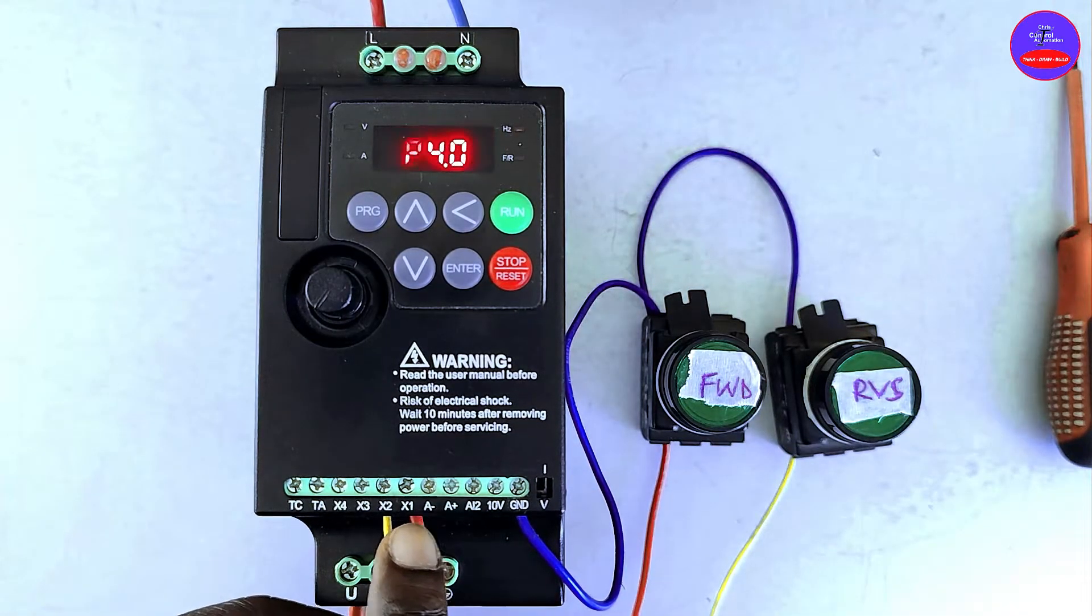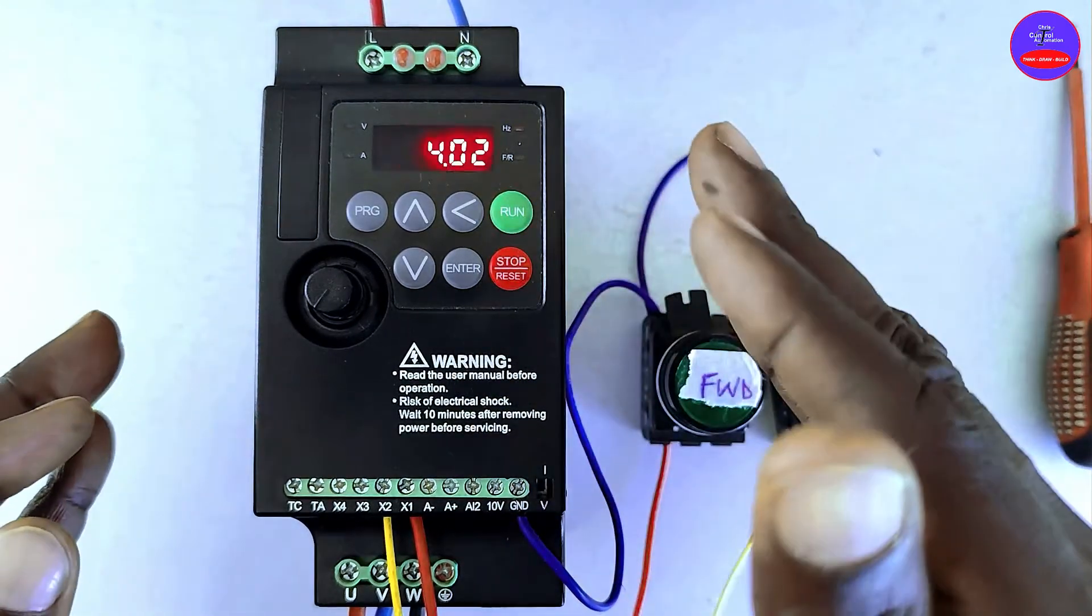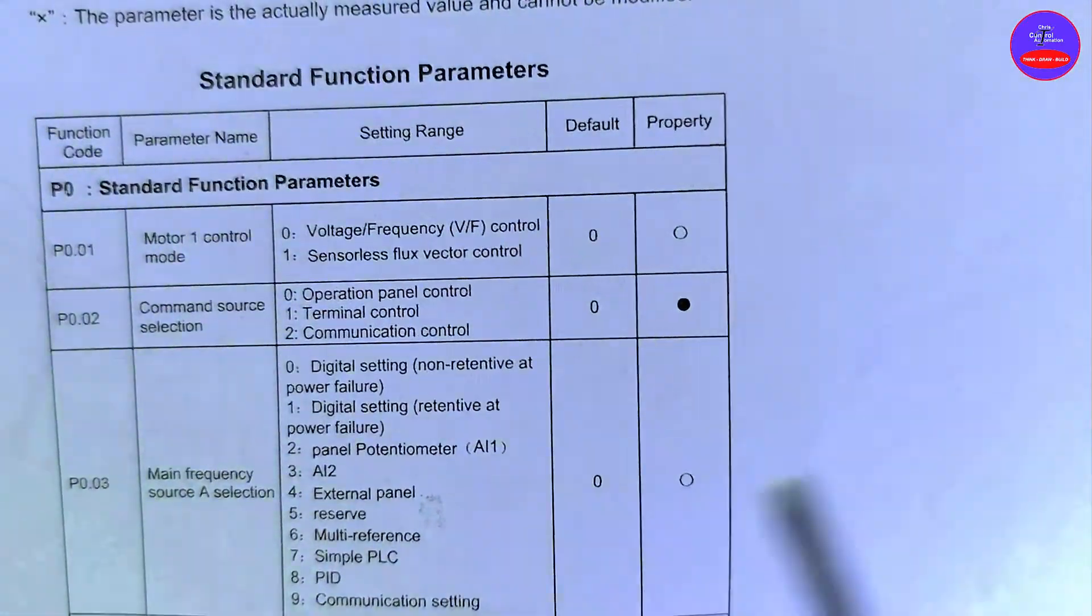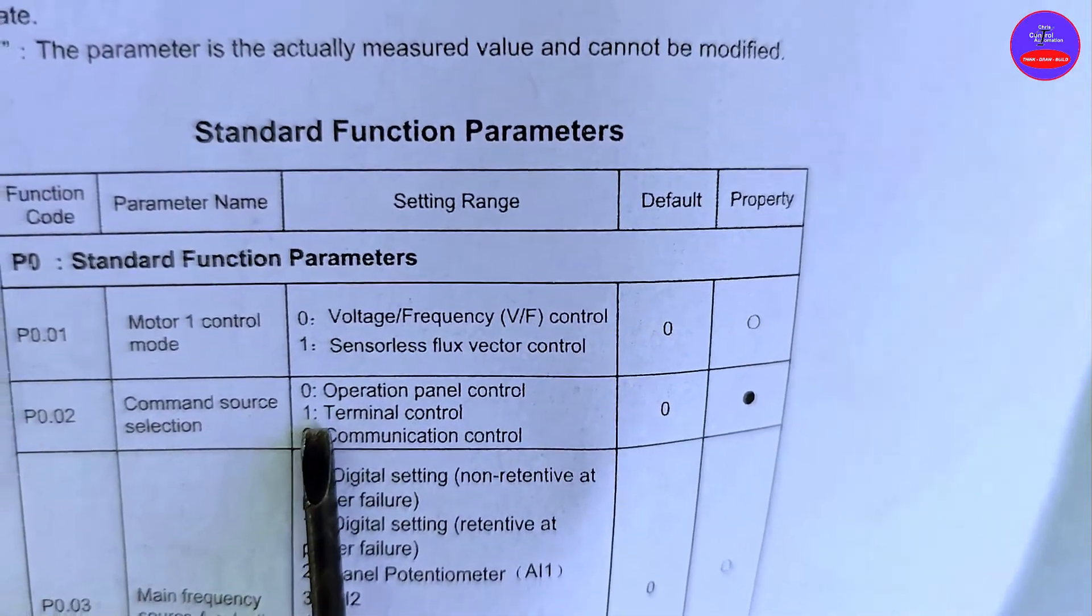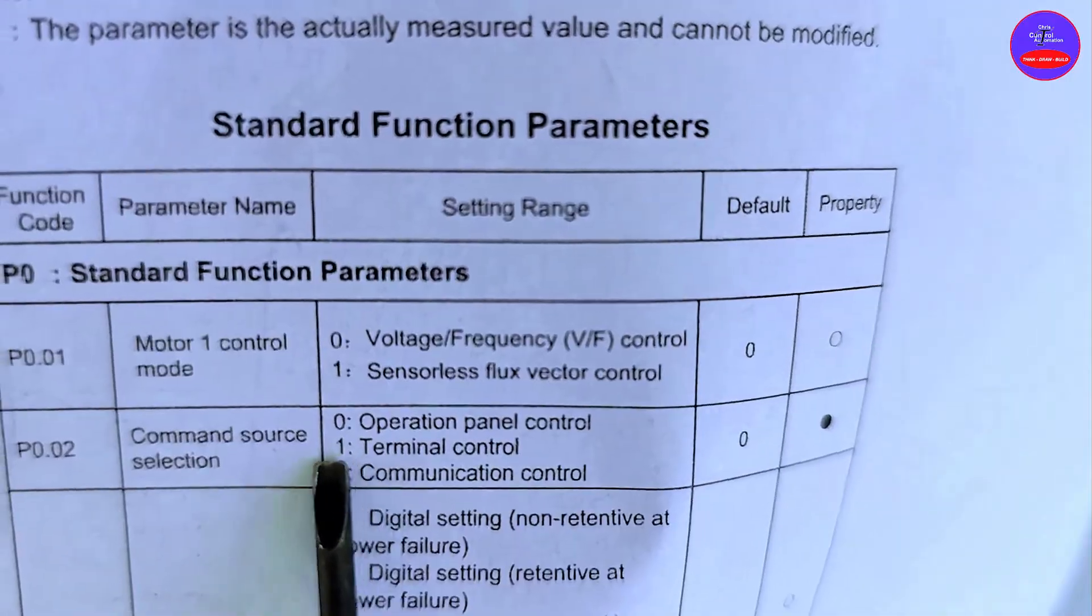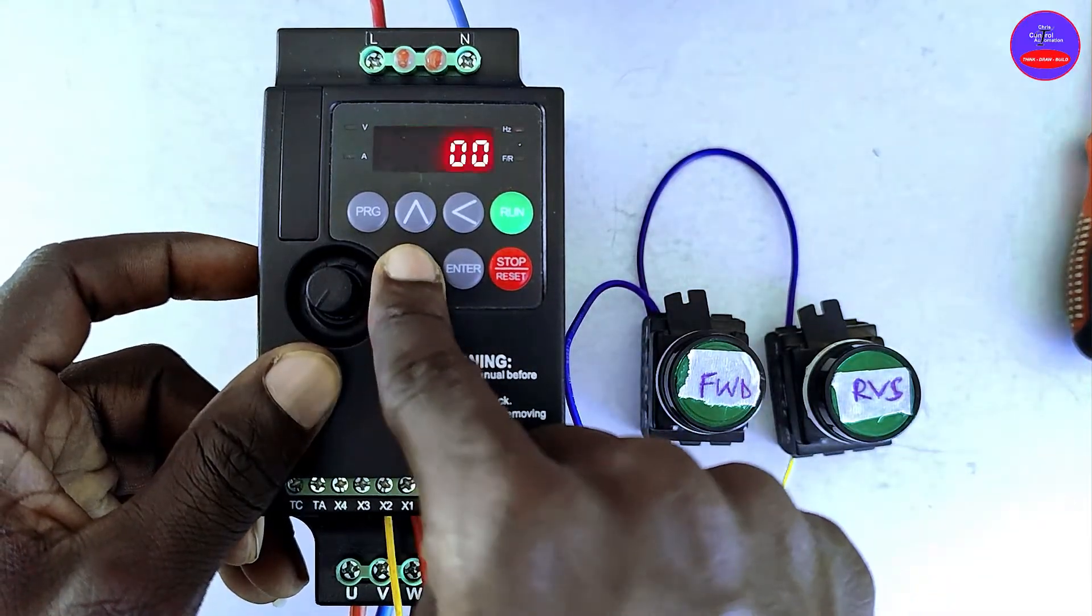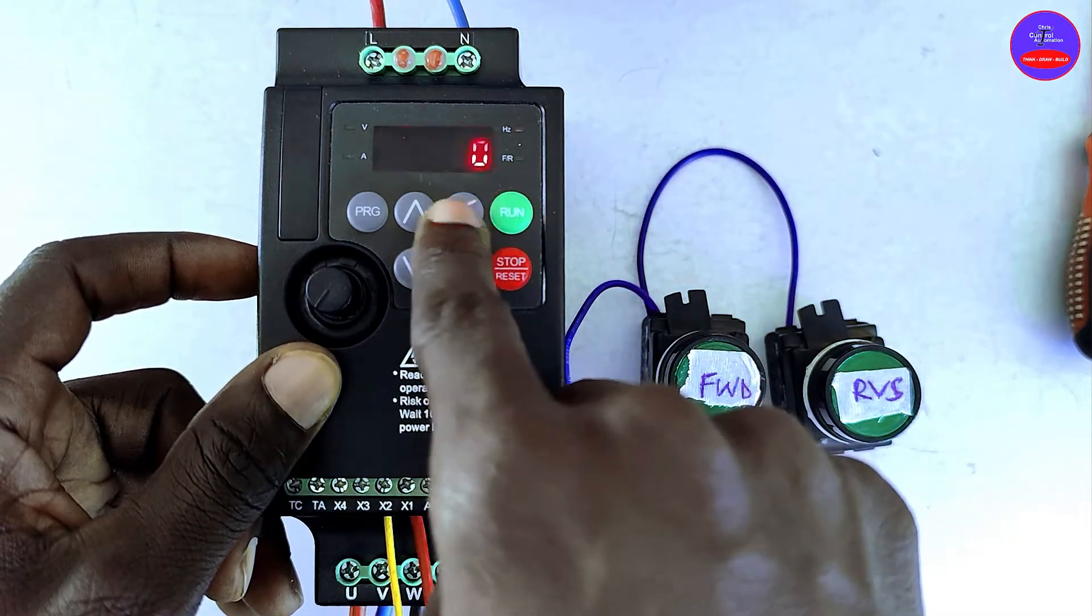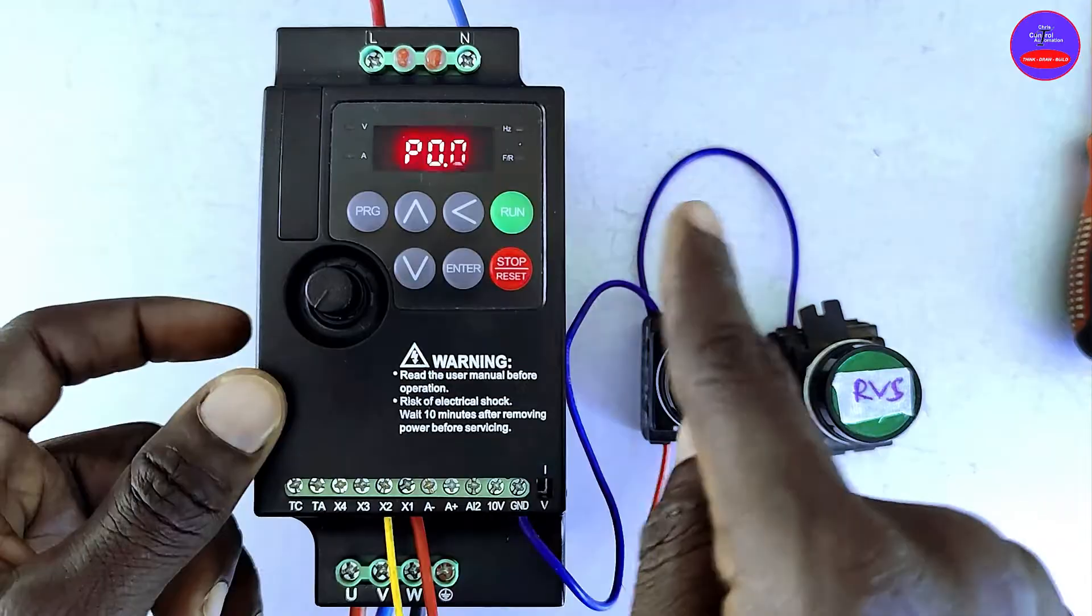Now we are done with the X1 and X2 configurations. We are going to select the type of operation or control. We are going to select terminal control. On this diagram we have command source. Zero is operation control, one is terminal control. So we are going to select P0.02 and choose terminal control. Enter. Now it is already on one. We press enter. Go back.